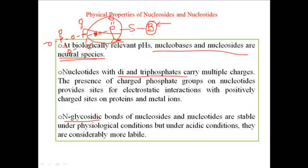Again I'm telling you the glycoside linkage means the linkage between the sugar and the base. So this is the N-glycosidic bond which is stable under physiological conditions but under acidic conditions they are considerably more labile. That's another very important consideration.